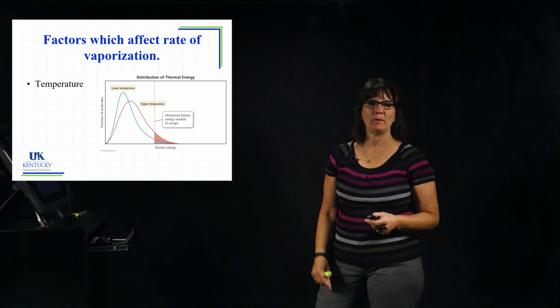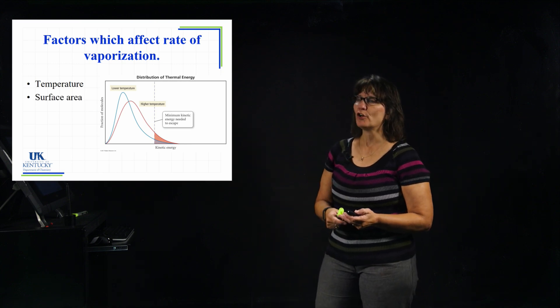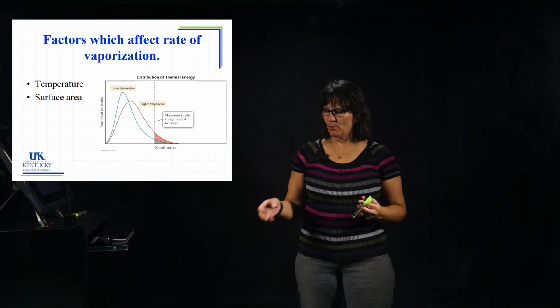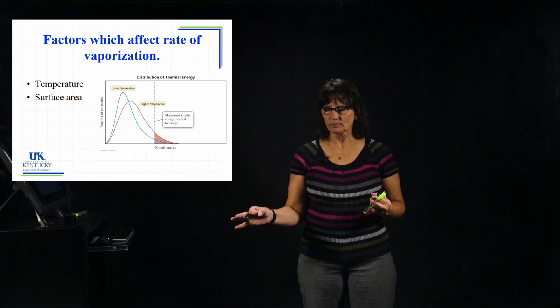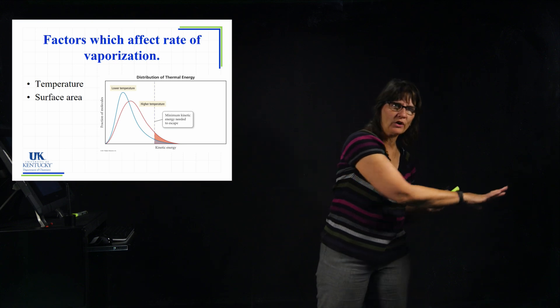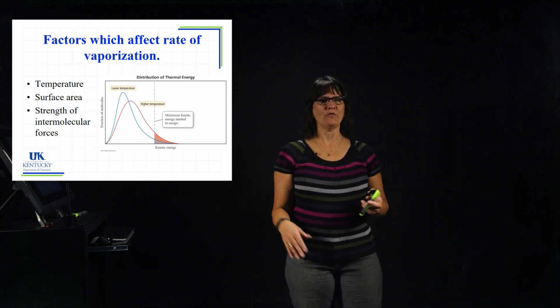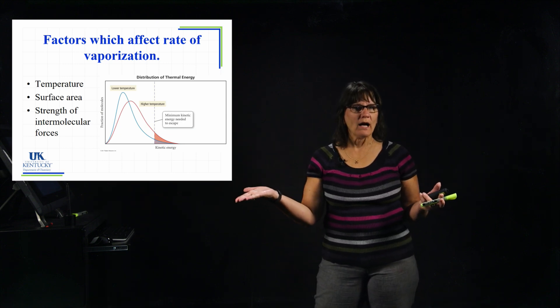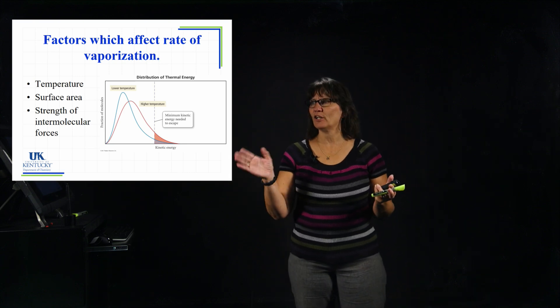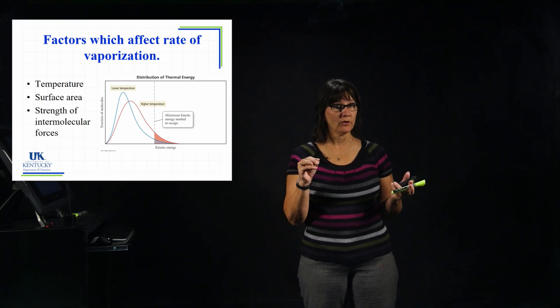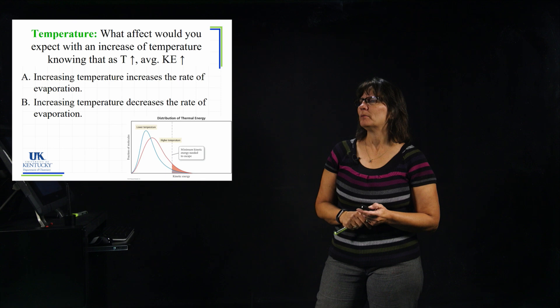So temperature is one. Compare inside versus out on a hot summer day. Surface area is another one. If I were to have a little water open in a small container or take the same amount of water and pour it all out on the counter, the surface area is going to affect it. And if I have two different things, one is rubbing alcohol and the other one is water, they have different attractions between the molecules and that's going to affect. So we're going to look at each one of these three things in a little bit more detail.